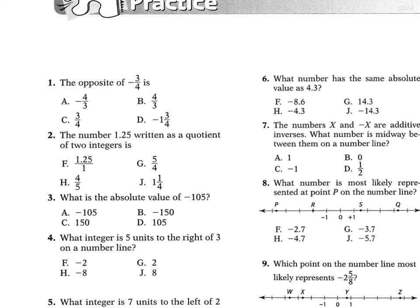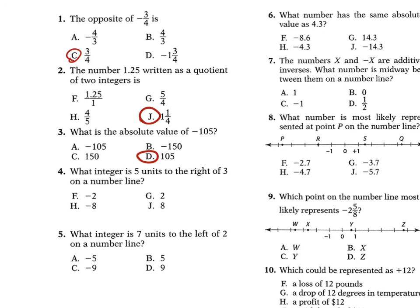For the practice from this section: number 1 asks the opposite of negative 3/4, and that's just positive 3/4. Number 2 asks 1.25 written as a quotient of two integers — 1.25 is 1 and 1/4. For 3, the absolute value of negative 105 is just positive 105, so it's D. For 4, the integer 5 units to the right of 3 on the number line — 3 plus 5 is 8. Number 5 asks what integer is 7 units to the left of 2: 2 minus 7 is negative 5.